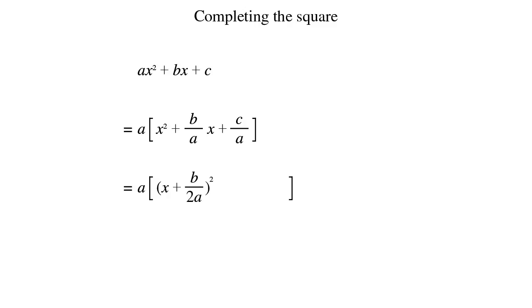Next, we subtract the square of the non-x term inside the bracket, so in this case we subtract b squared over 4a squared. Now, we add c over a.